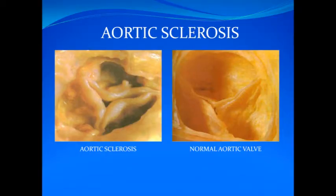The murmur of aortic valve sclerosis should be distinguished from an innocent murmur. By definition, innocent murmurs occur in the absence of any cardiovascular abnormalities. Innocent murmurs are due to an increased velocity across the normal aortic valve.